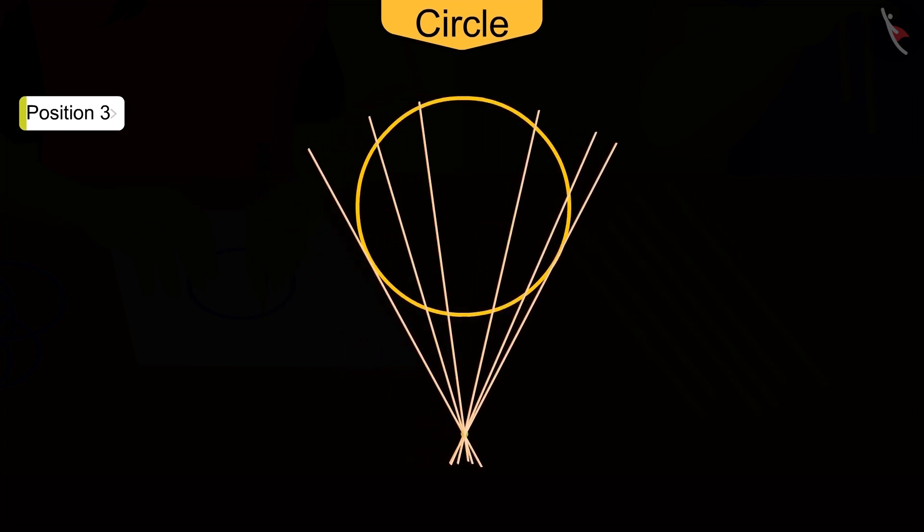In each case, any line drawn from this point intersects the circle at two points. But these are the only two lines which intersect the circle at only one point. And these two lines are known as the tangents to a circle.